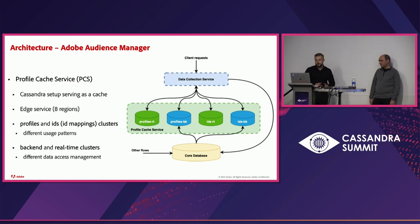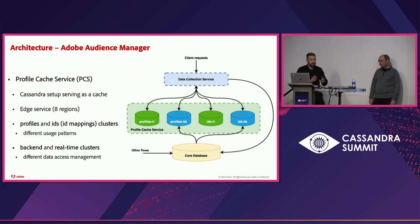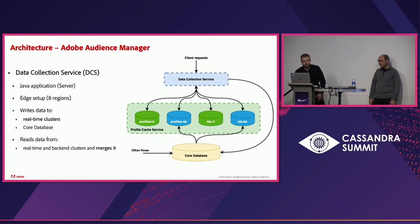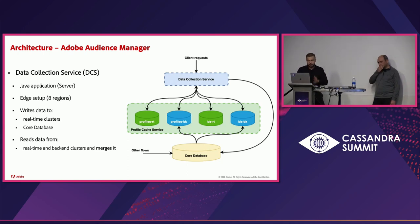The profile cache service — how we officially call the Cassandra setup — is the caching system present in all eight edge regions. It has two types of clusters in terms of usage patterns, and two other types in terms of data access management: backend and real-time. The data collection service is the Java application that serves client requests, interacting with Cassandra and also pushing data to the core database. It only writes data in the real-time clusters, but reads from both backend and real-time clusters, merging the result before sending a final response.